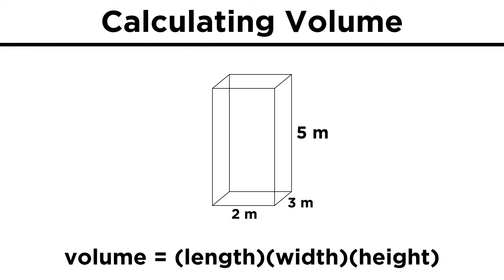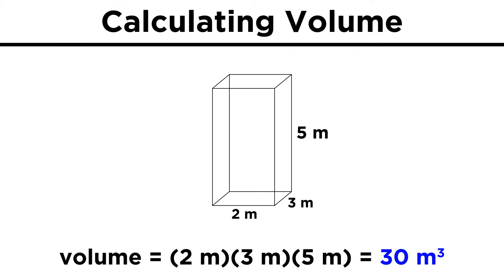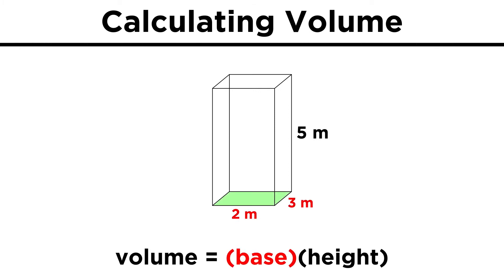For a rectangular prism, it's just length times width times height. Two times three times five gives thirty cubic meters. What we are really doing is calculating the area of the base and multiplying by the height, as though running the base up through the height of the shape to span its volume.